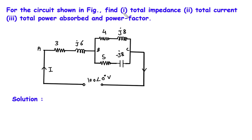For the circuit shown in the figure, find: number 1 total impedance, number 2 total current, number 3 total power absorbed and power factor. In this circuit we have to find first of all the total impedance, then total current I, then total power absorbed and then power factor.